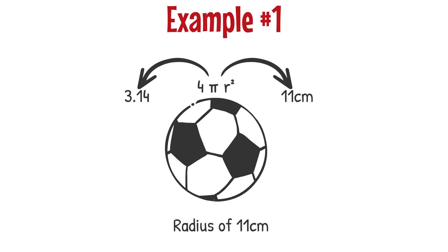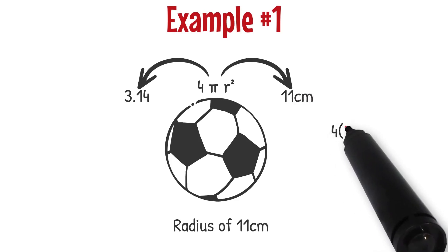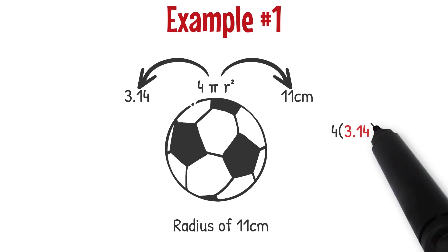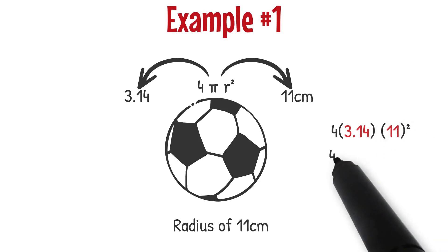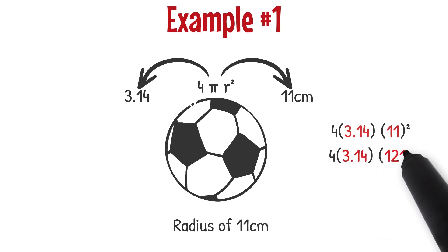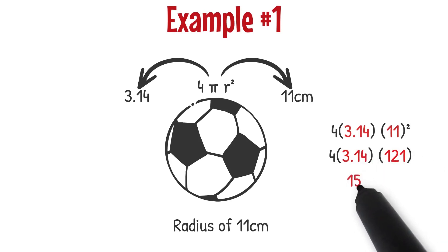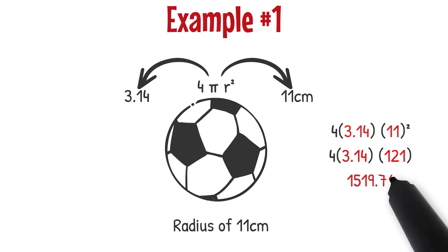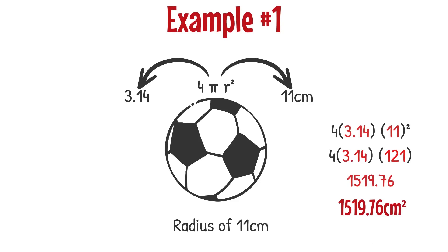Now I'm going to solve one thing at a time. I'm going to rewrite my 4 and rewrite my 3.14. The only thing I'm going to change is my 11 squared — I'm going to rewrite that as 121. Now I'm going to multiply all three of my numbers together, and I'm going to get 1,519 and 76 hundredths. We're dealing with centimeters, so my answer is centimeters squared. The final answer is 1,519.76 centimeters squared.